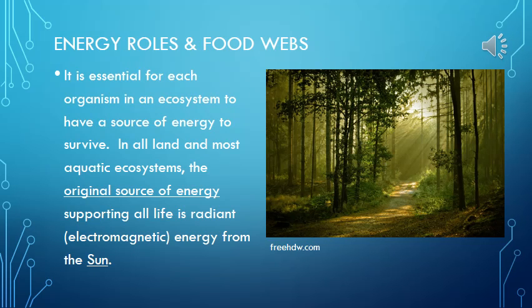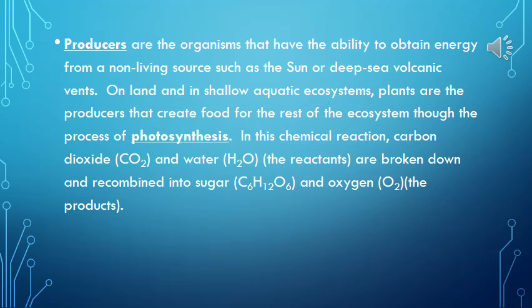Energy Roles and Food Webs. It is essential for each organism in an ecosystem to have a source of energy to survive. In all land and most aquatic ecosystems, the original source of energy supporting all life is radiant or electromagnetic energy from the sun. Producers are the organisms that have the ability to obtain energy from a non-living source, such as the sun or deep-sea volcanic vents.